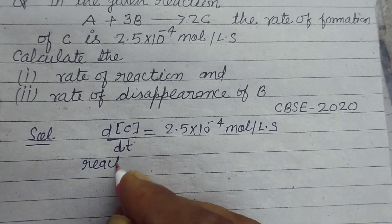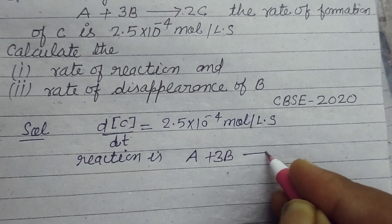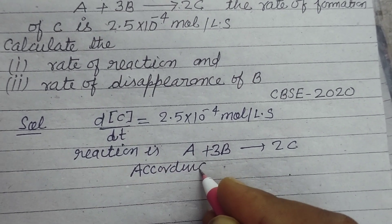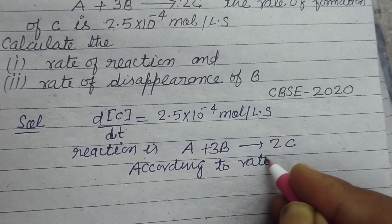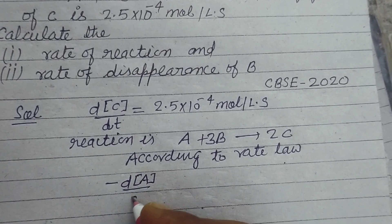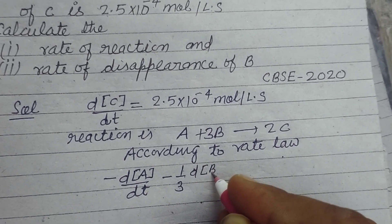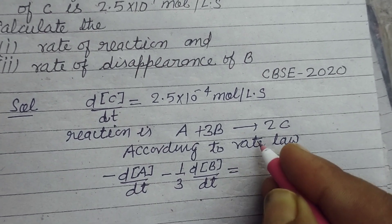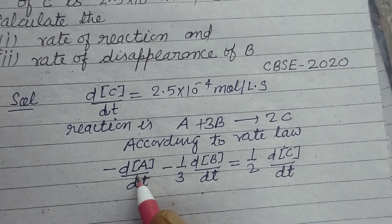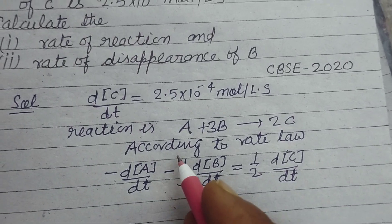The reaction is A + 3B → 2C. So according to the rate law: −d[A]/dt = −(1/3)d[B]/dt = (1/2)d[C]/dt. Here, the negative sign is taken because the reactants are going to produce product, so they are disappearing.